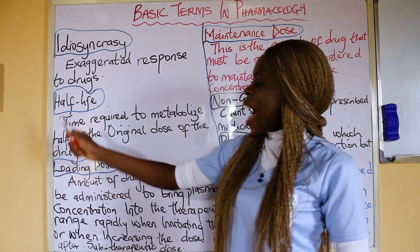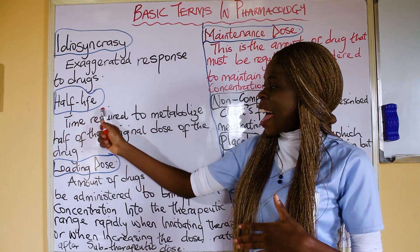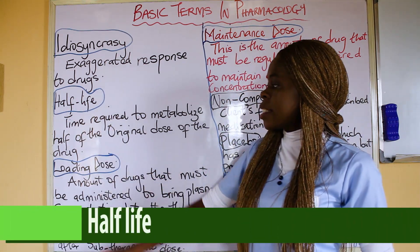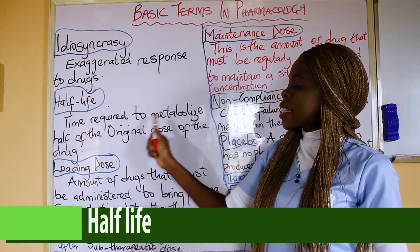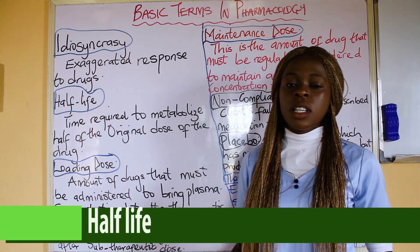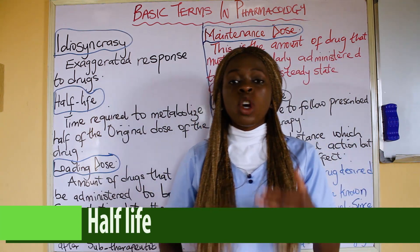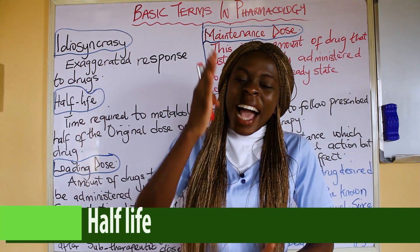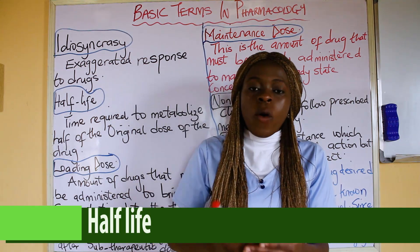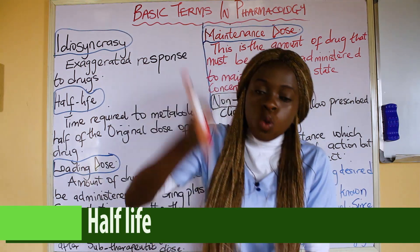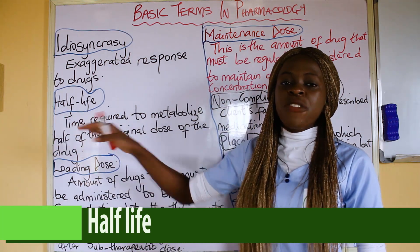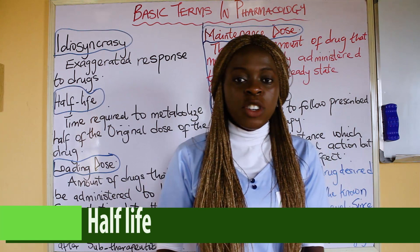The next term is Half Life. As the name implies, Half Life is the time required to metabolize half of the original dose of a drug. It is the time required for your body to metabolize half of the dose. For example, if you took 400 mg, the time required for the body to metabolize 200 mg is known as the Half Life of the drug.